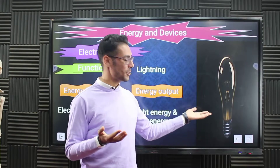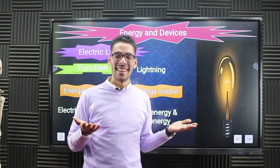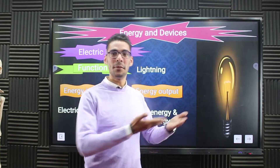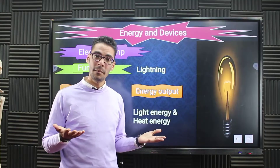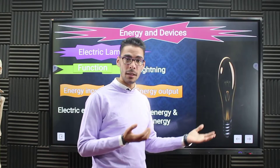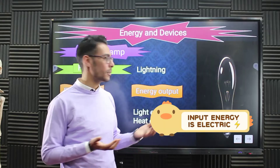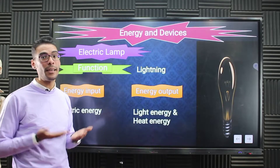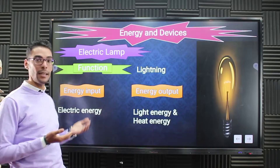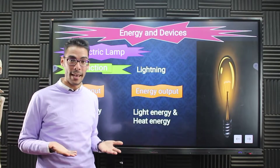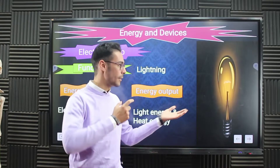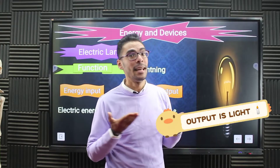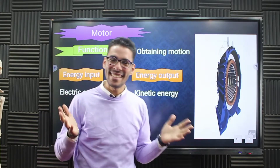Let's get started. Here is the first electric device: the electric lamp. Can you tell me the input and the output energy from the electric lamp? The input energy — the energy used to make the electric lamp work — is electric energy. The output energy from the electric lamp is light and heat.